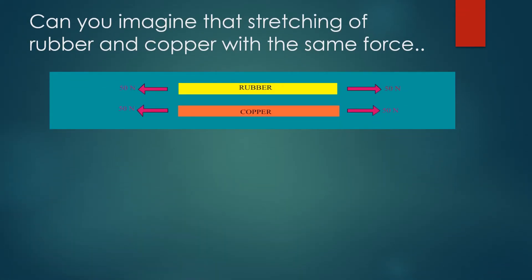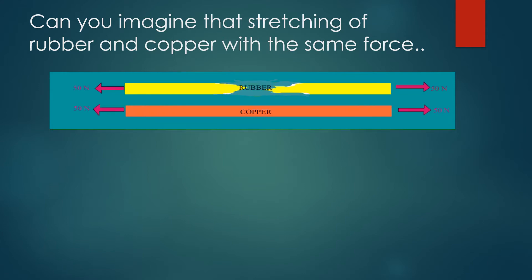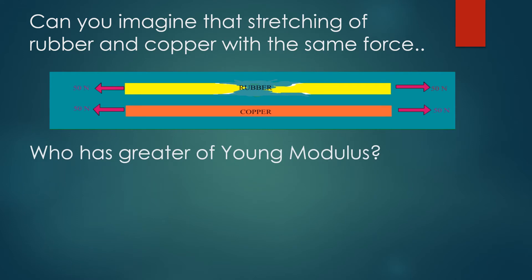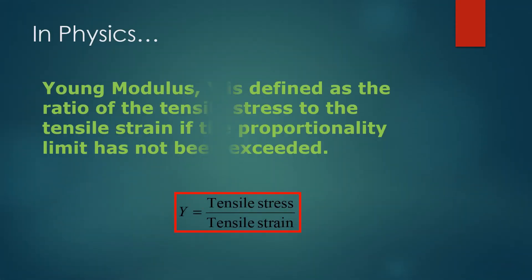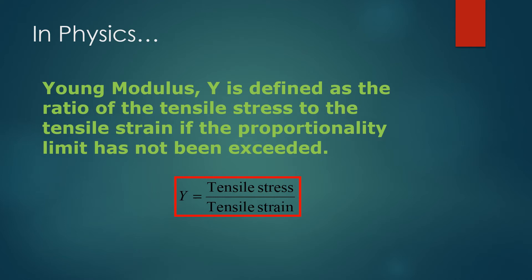Can you imagine stretching rubber and copper with the same force? Which has a greater Young's modulus? Copper does, because copper does not easily deform even with great force. In physics, Young's modulus is defined as the ratio of tensile stress to tensile strain, if the proportionality limit has not been exceeded.